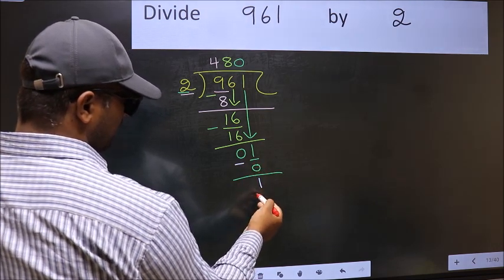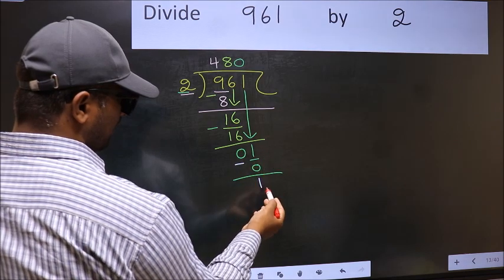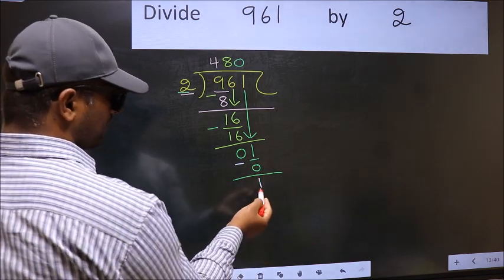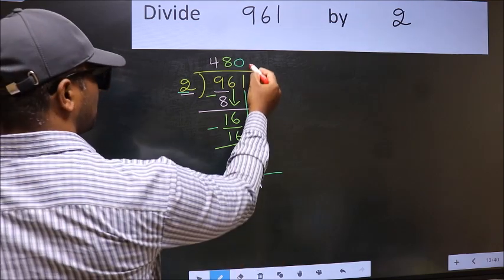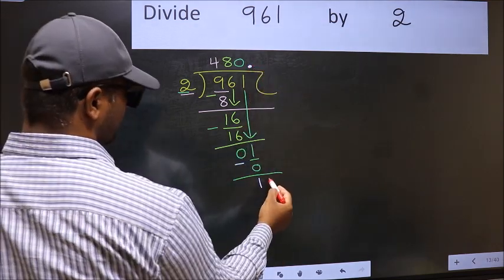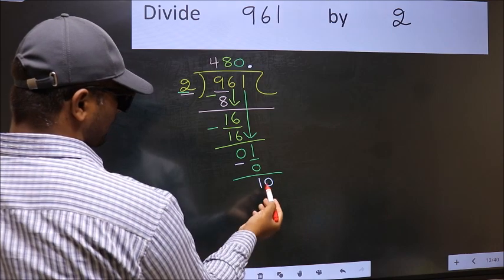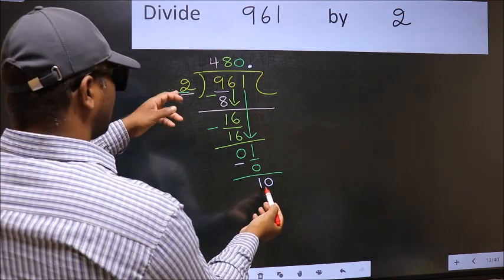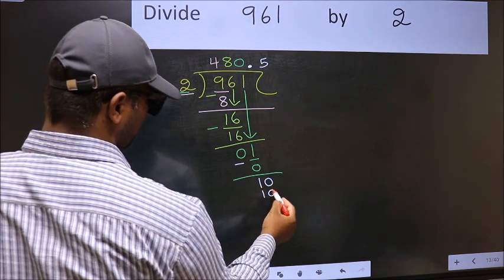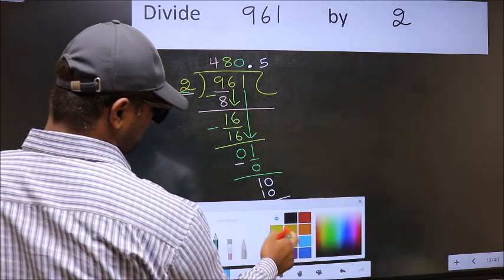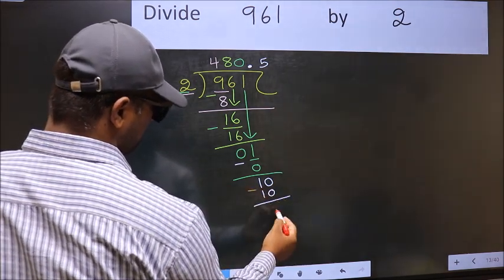Over here, we did not bring any number down. And 1 is smaller than 2. So now you can put a dot and take 0. So 10. When do we get 10 in 2 table? 2 fives, 10. Now you should subtract. 10 minus 10, 0.